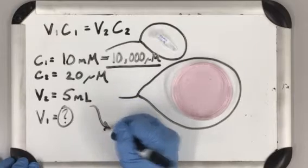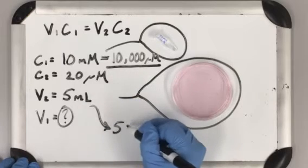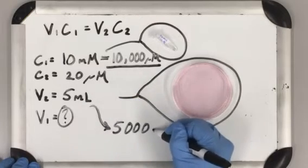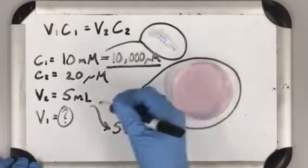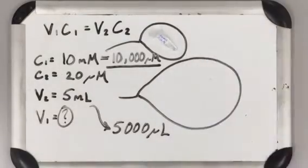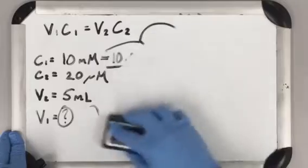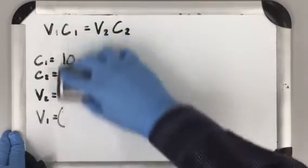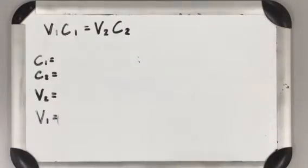I'm going to do the same thing for volume. Since I want to work in a smaller volume, I'm actually going to use 5,000 microliters in this equation. I'm keeping things on the same scale.